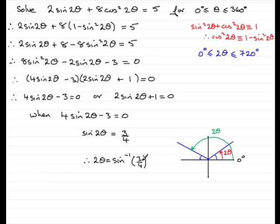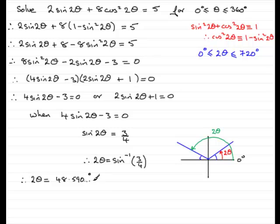Getting on the calculator: sin⁻¹(3/4) = 48.590...°. Make sure your calculator is in degrees mode rather than radians. This 48.590° is the small reference angle in the first quadrant, corresponding to the first red 2θ.